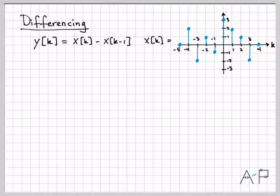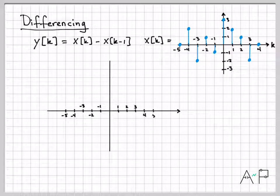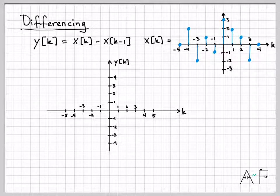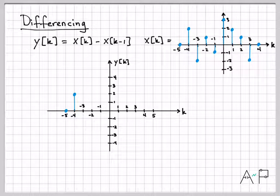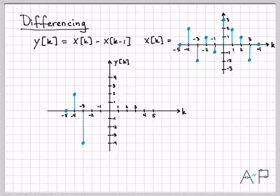In the middle we have times where x of k is non-zero, and we're going to perform this differencing operation and plot what y of k looks like. The easiest way to do this is just time by time. At time minus 5, y at time minus 5 equals x at time minus 5 minus x at time minus 6. Both are 0, so 0 minus 0 is 0. At time minus 4, we subtract those two values: 2 minus 0 is 2. At the next time instant, negative 2 minus 2 is negative 4.